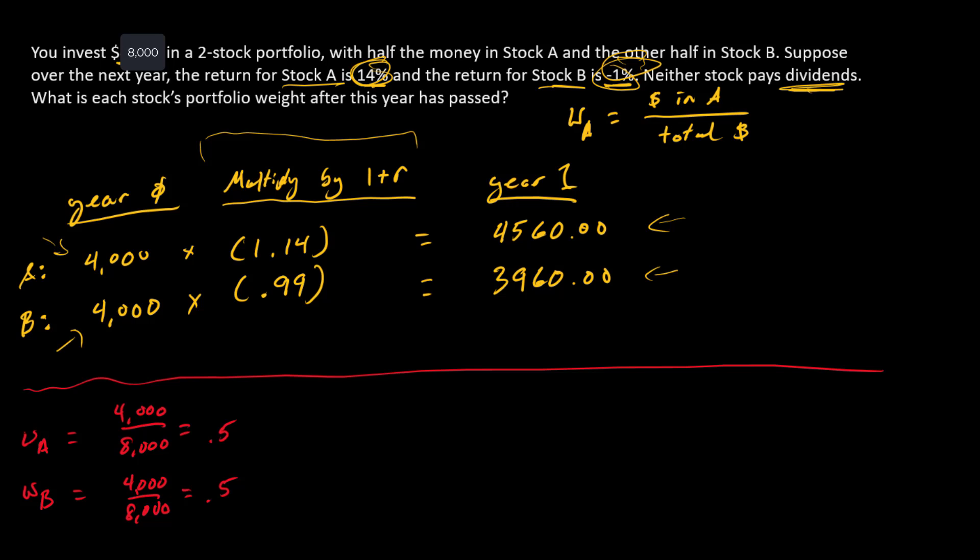One other calculation we'll do before we calculate the new weights: let's add these two things up so we'll see the total dollars in the portfolio after year one. This portfolio is going from $8,000 to $8,520.